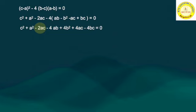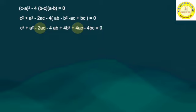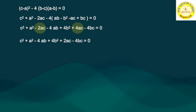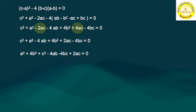There are like terms: minus 2ac and plus 4ac. Combining these gives plus 2ac. After simplification, the equation becomes: a² plus 4b² plus c² minus 4ab plus 2ac minus 4bc equals 0, with all terms written in alphabetical order.